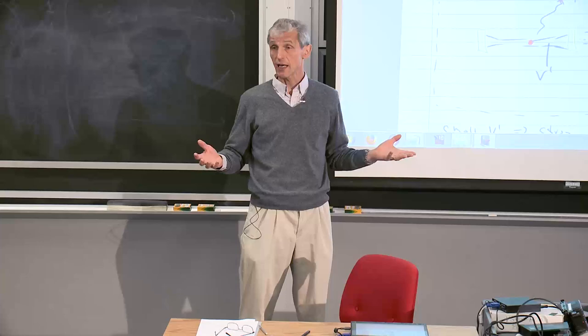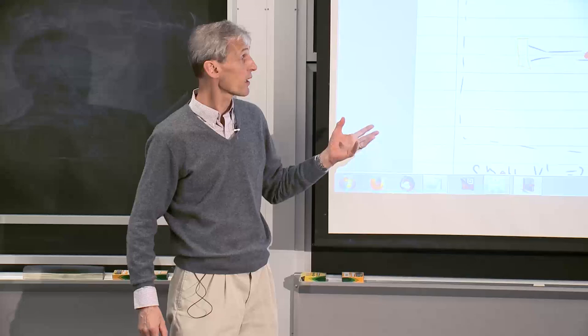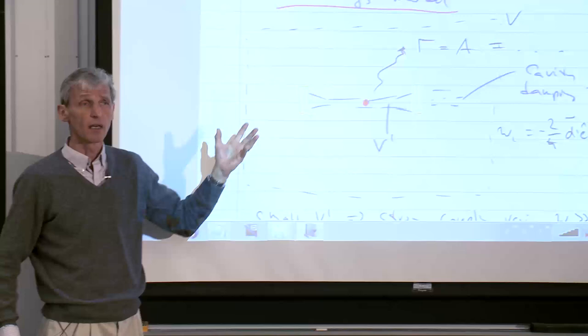We did field quantization and we have now our quantized Hamiltonian. On Monday I started to discuss the paradigmatic example for how you should think about the vacuum and about emission of photons into the vacuum — these are the vacuum Rabi oscillations described by the Jaynes-Cummings model.